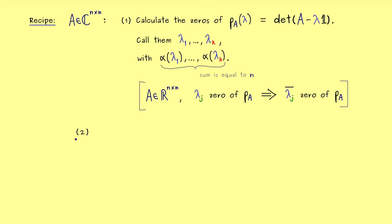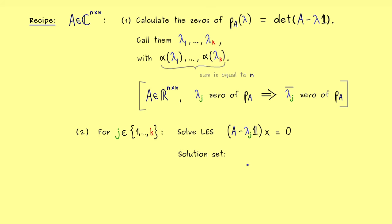After step one, we go to step two: calculating the eigenvectors. This must be done for every distinct eigenvalue, so for j going from 1 to k. For each eigenvalue, we solve the system of linear equations where the left-hand side is given by A minus lambda_j times the identity matrix and the right-hand side is the zero vector in C^n. The solution set of this LES — the kernel of this matrix — is what we call the eigenspace associated to lambda_j, written as eig of lambda_j.